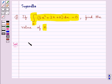We are given that the integral from 0 to 1 of 3x squared plus 2x plus k dx is equal to 0.